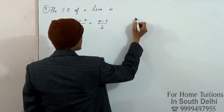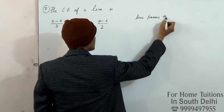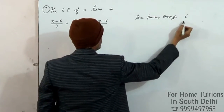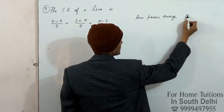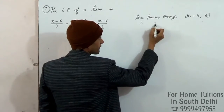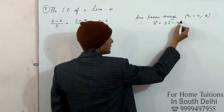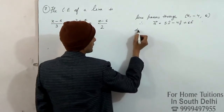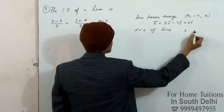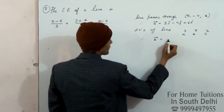This line passes through the point (5, -4, 6). The position vector is 5i minus 4j plus 6k. The direction ratios are 3, 7, and 2.